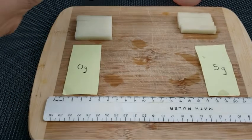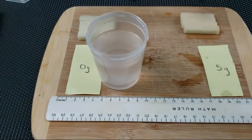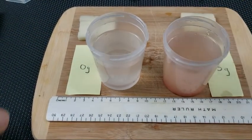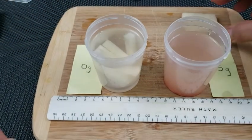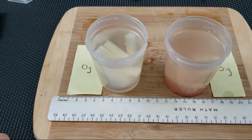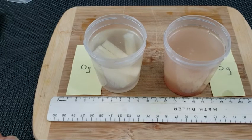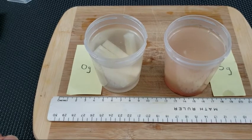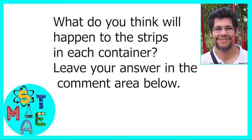Place at least two potato sticks in each container. Make sure to completely cover the potato stick in container one with distilled water, and cover the potato stick in container two with the 5% solution of sodium chloride or salt. Start your 30 minute timer. Let the potato strips sit in the different solutions undisturbed for the full 30 minutes. What do you think will happen to the strips in each container?